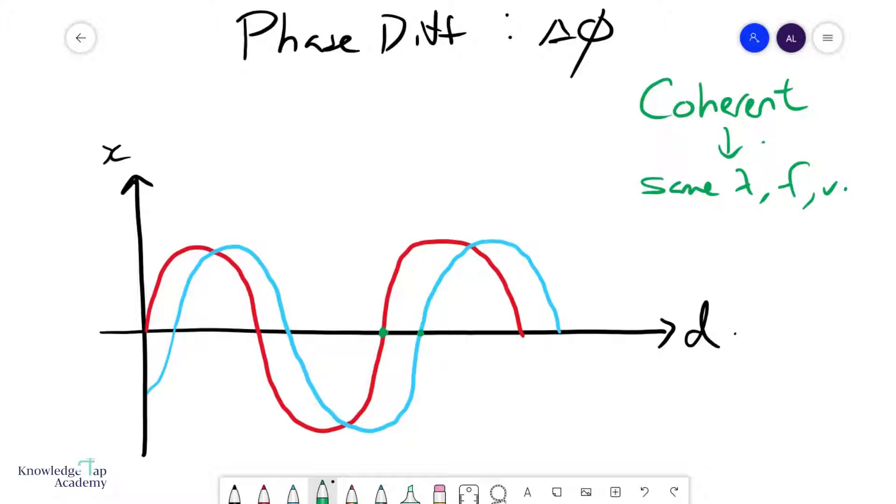same phase. But of course, an easier way to think of it is that they are similar points on the wave. We want this separation here, and we're going to call this Δx. You